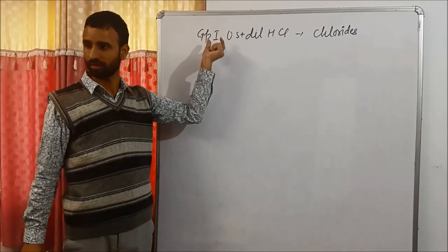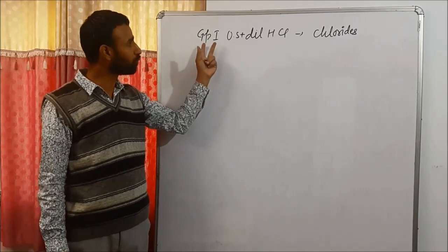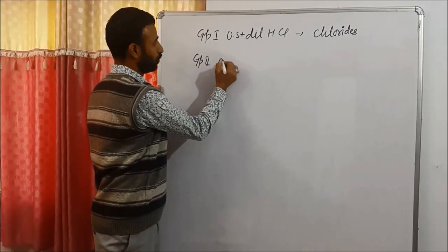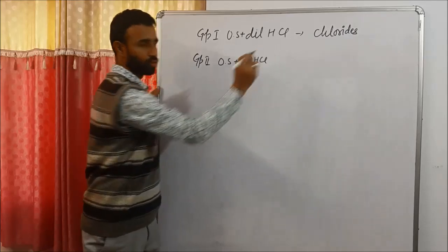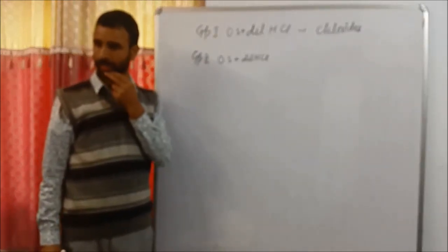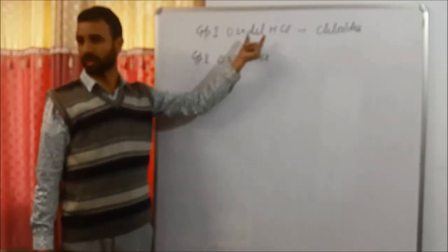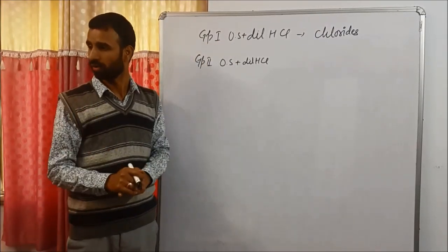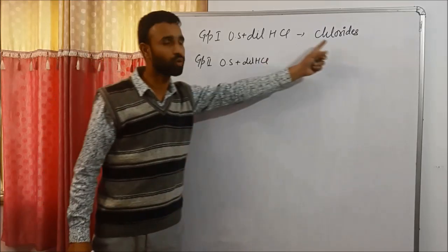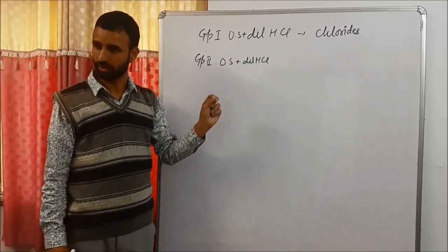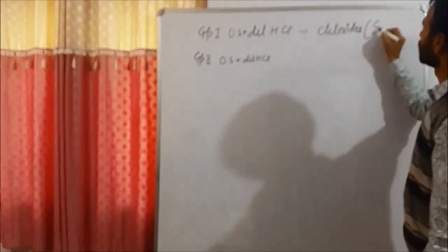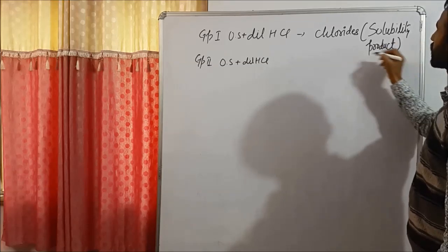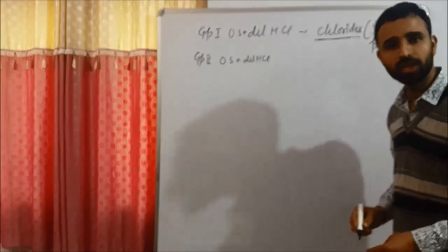Why only for group 1? Why not for group 2? Chlorides of group 1 are precipitated. In case of group 2, when we add dilute HCl first, there is no precipitate. Why? That means the solubility product of chlorides of group 1 ions is low. Solubility of group 1 chlorides is low — it is related to solubility product.